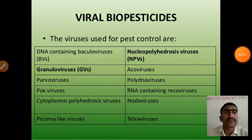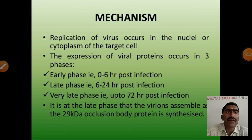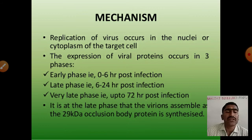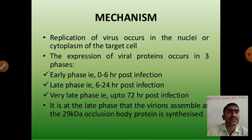Let's move towards the mechanism of viral biopesticides — how do they exactly control the pest. Replication of the virus occurs in the nuclei or cytoplasm of the target cell. That virus multiplies by replicating inside the cytoplasm or nucleus, producing multiple copies in that particular host. The expression of viral protein occurs in three different phases: early phase, late phase, and very late phase.